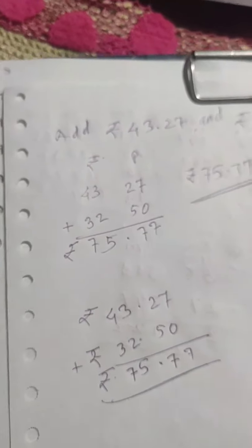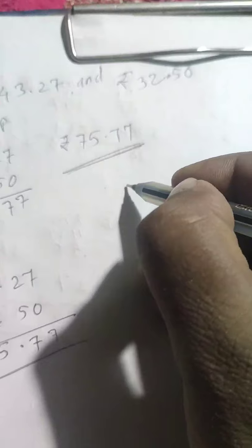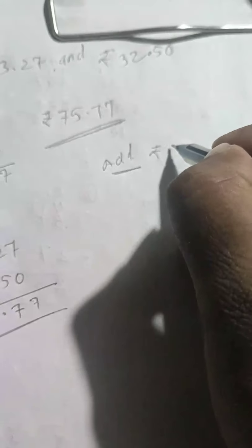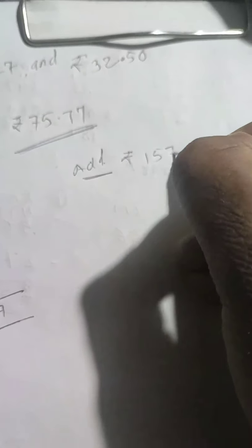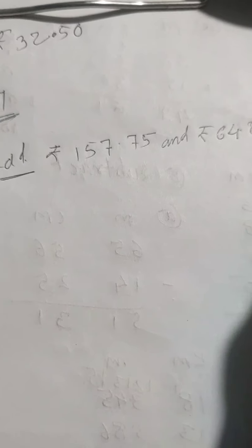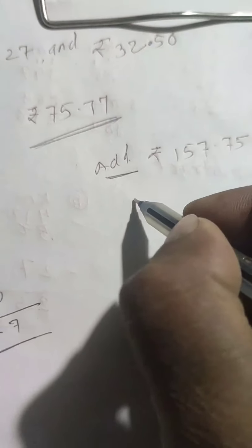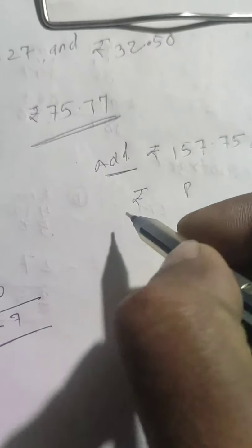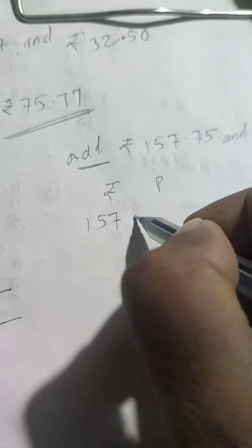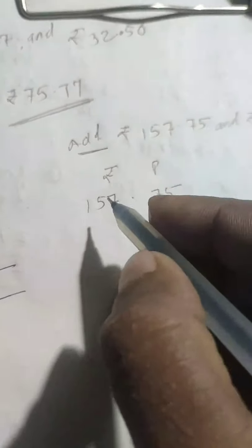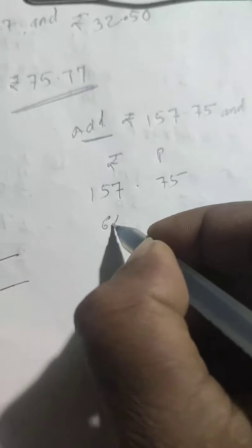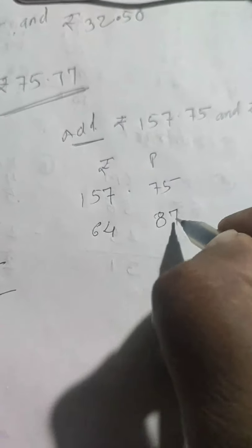Let's see another example. Add rupees 157 and 75 paisa, and rupees 64 and 87 paisa. Separate the rupees and paisa columns: 157 rupees with 75 paisa, then 64 rupees with 87 paisa.